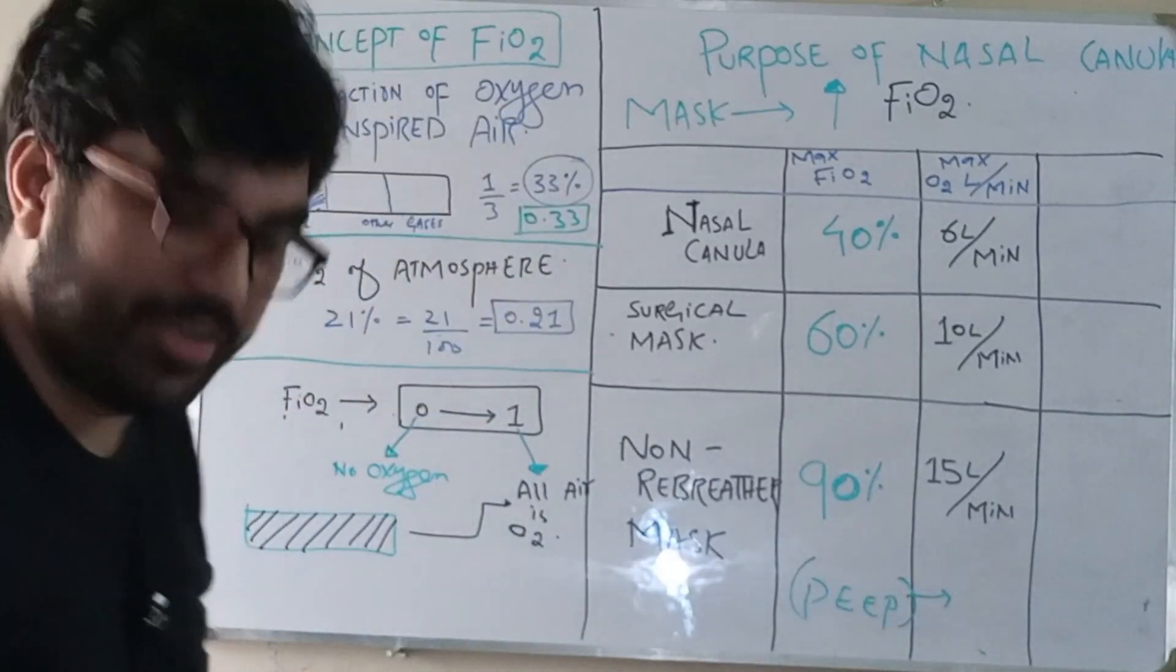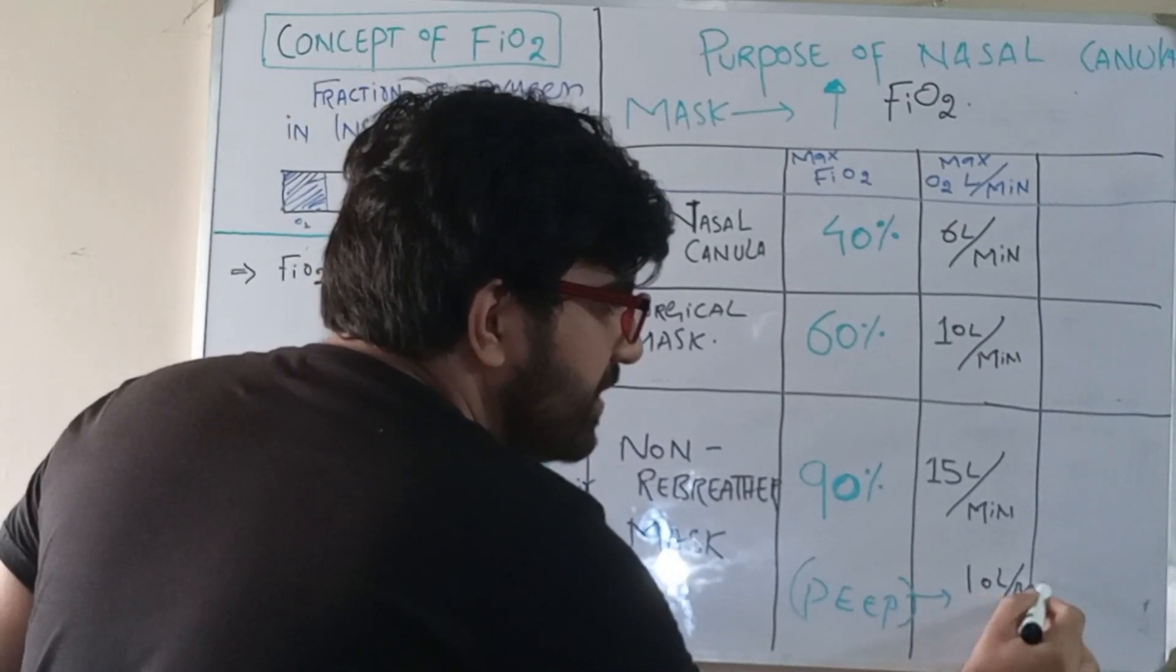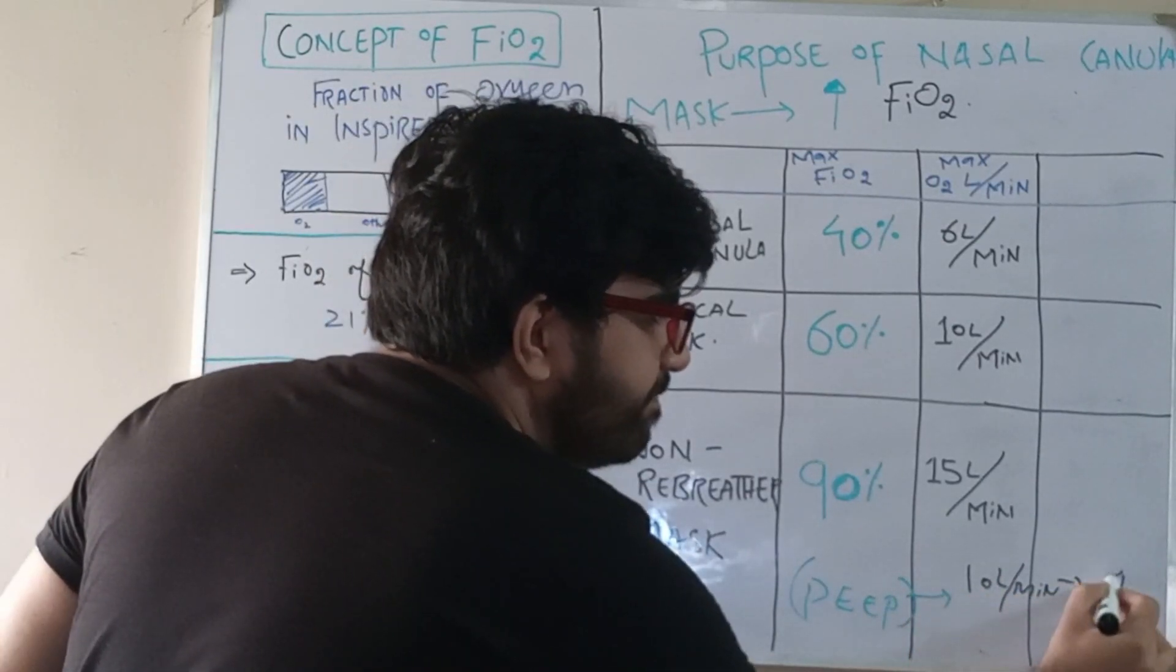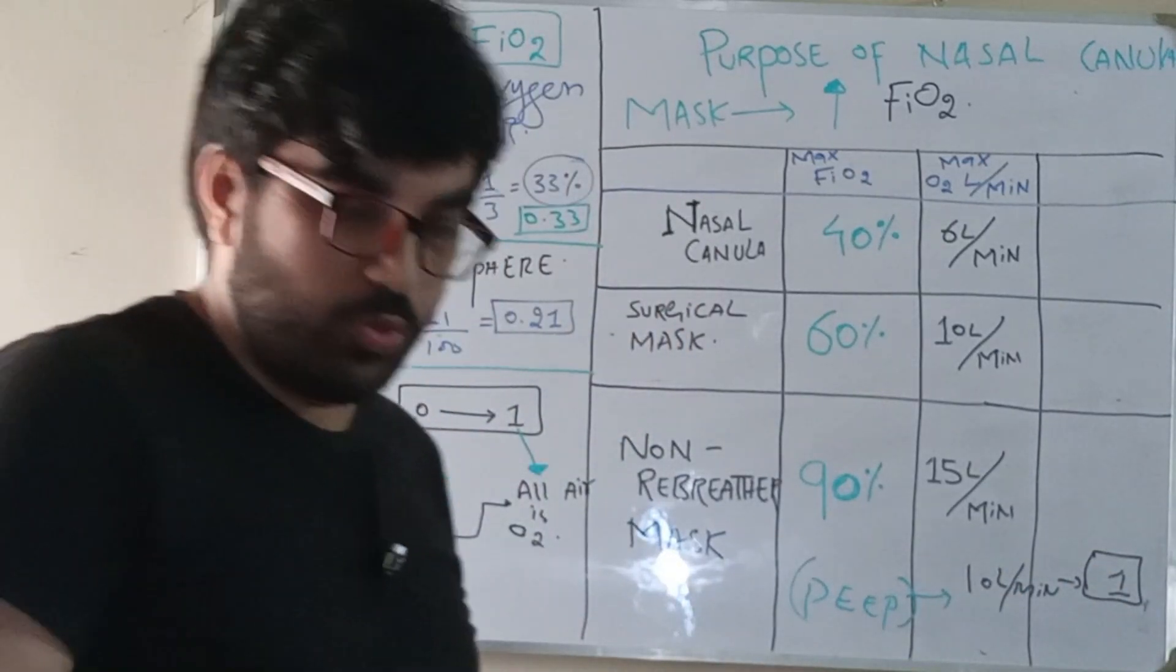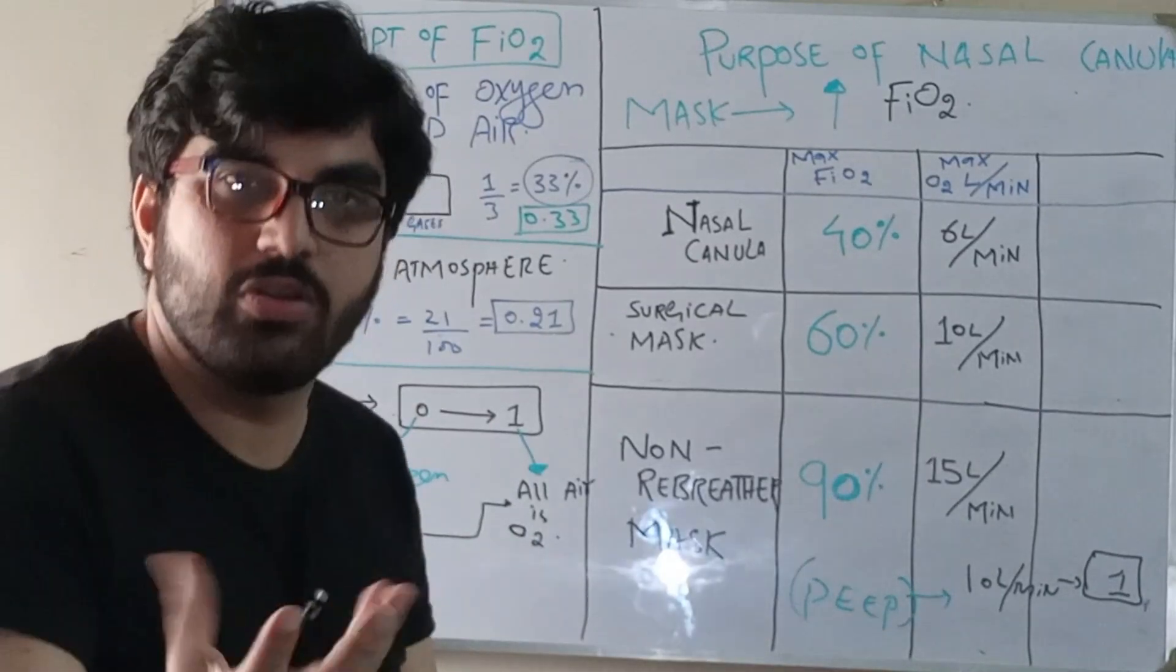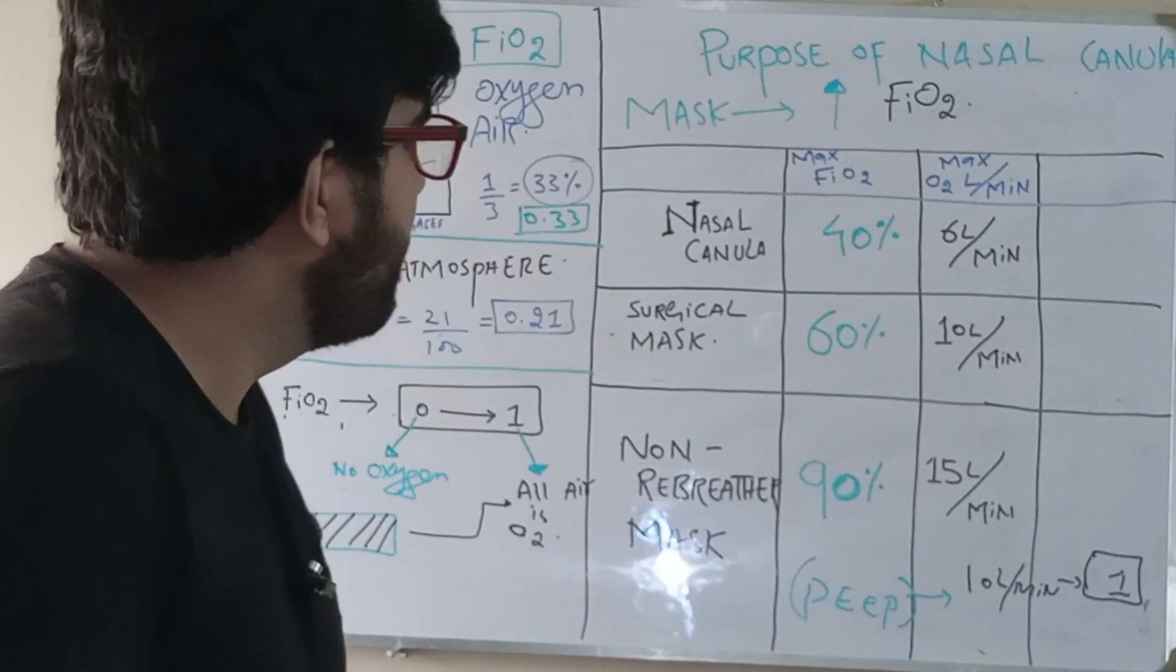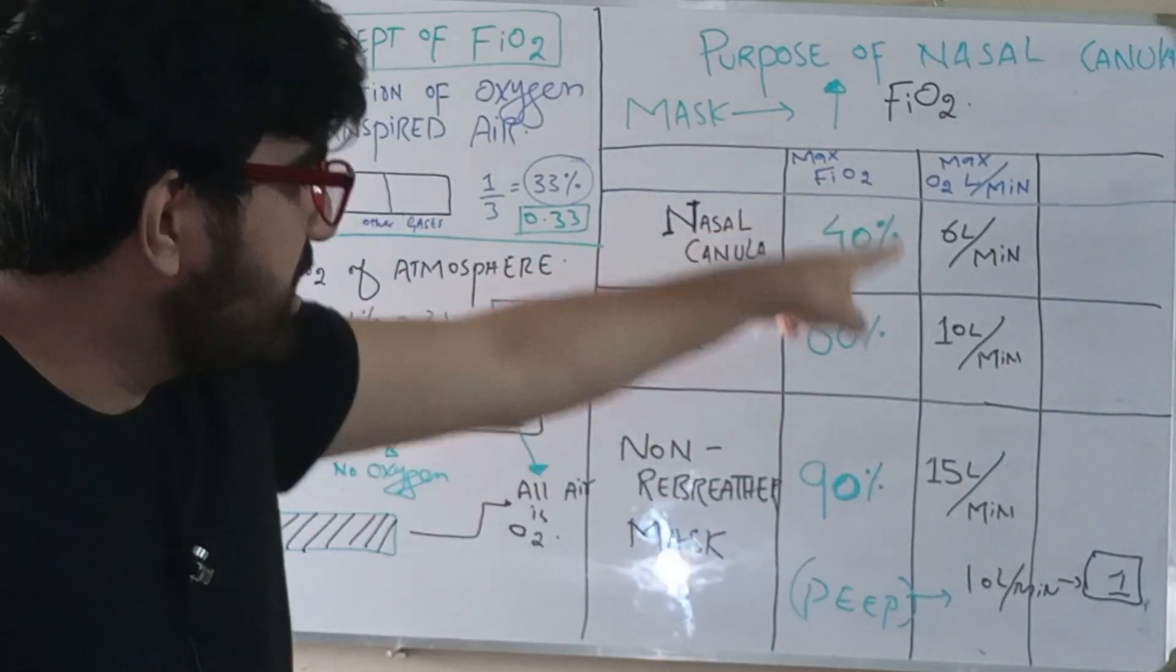Now that is the key point. Roughly it is said that if you increase 10 liters per minute of oxygen, it increases the PEEP by one. And we need the PEEP up to five or more than five in order to open the alveoli - for the alveoli to pop up, we need more PEEP.